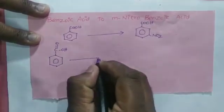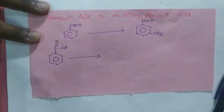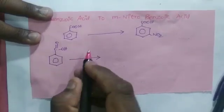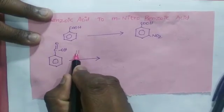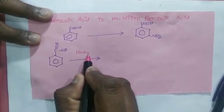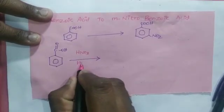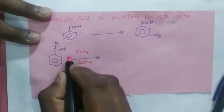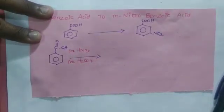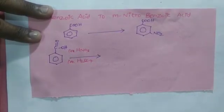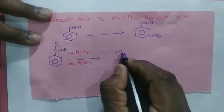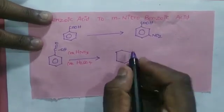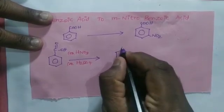To convert benzoic acid into meta-nitrobenzoic acid, I have to use a nitrating mixture. The nitrating mixture is nothing but concentrated HNO3 as well as concentrated H2SO4. In the presence of these, I will be getting meta-nitrobenzoic acid as my product.